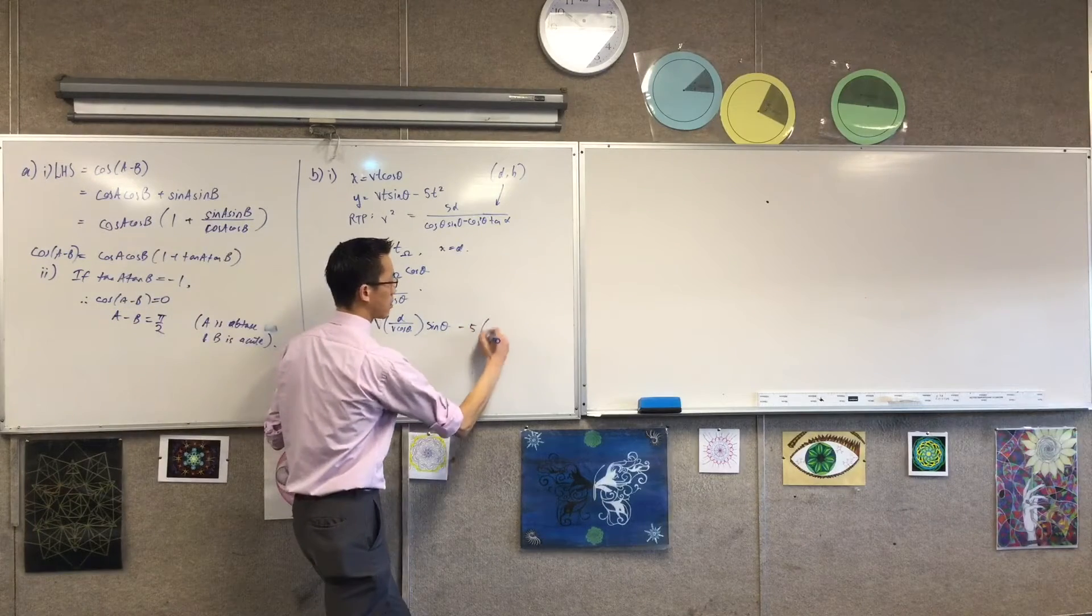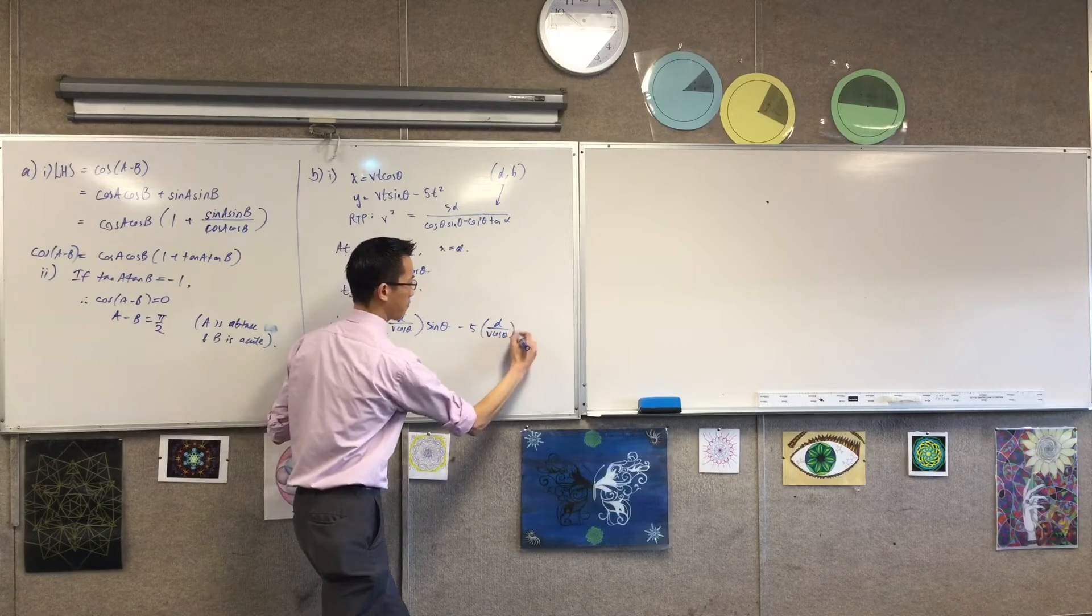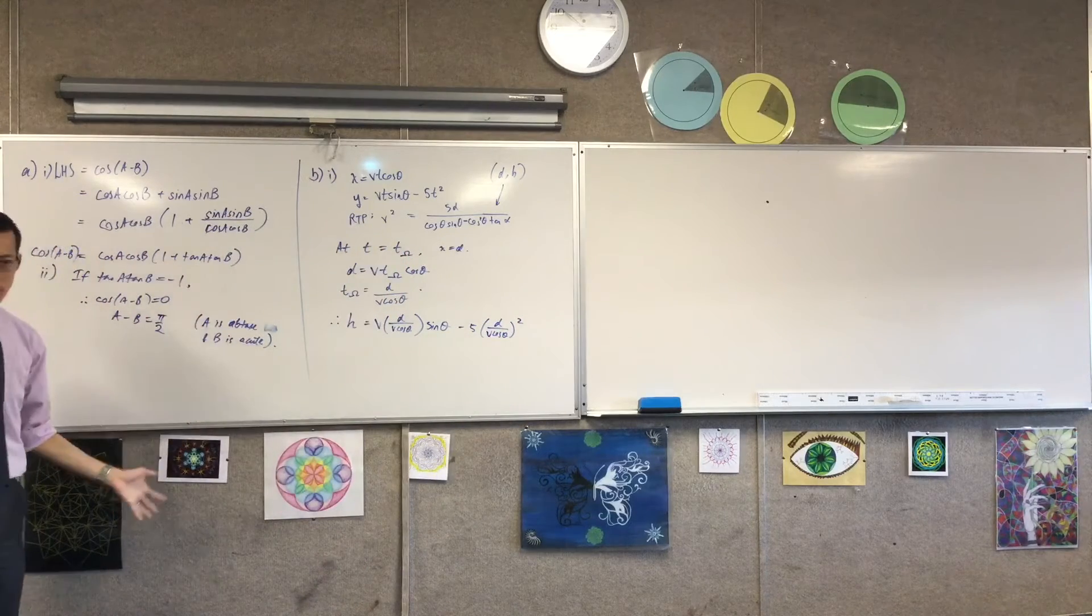Take away five lots of the same time, d on v cos theta, all squared. That's h.